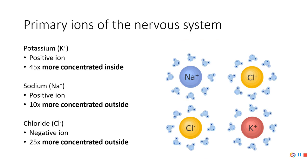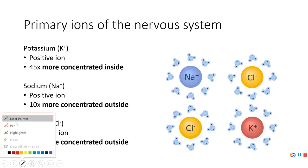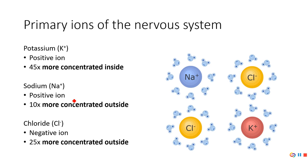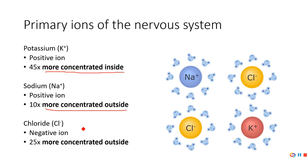When we talk about the nervous system, there are three ions, but really two that we're going to focus on: potassium and sodium. Both are positive ions, but what's important is that potassium is more concentrated on the inside, while sodium is more concentrated on the outside. Chloride is a negative ion, also more concentrated on the outside. Wherever there's sodium, there's usually chloride, so while we talk about sodium most of the time, chloride is usually doing the same sort of thing.